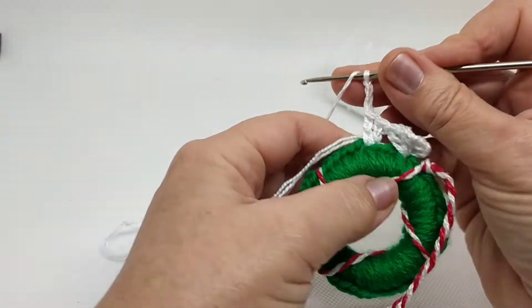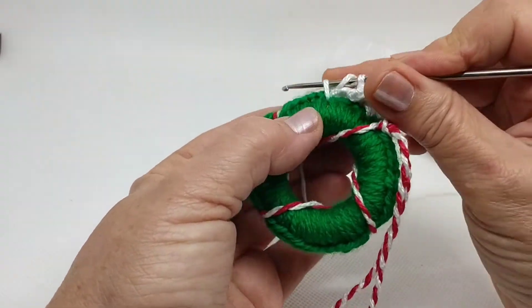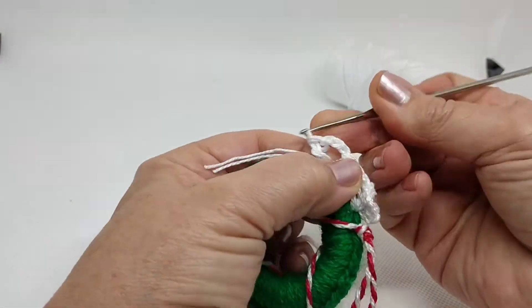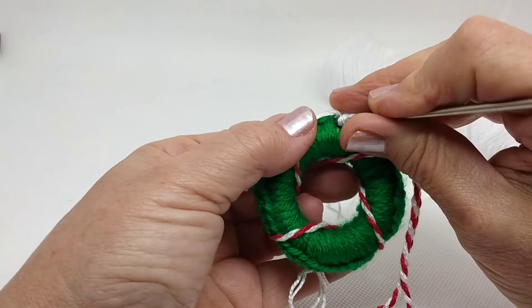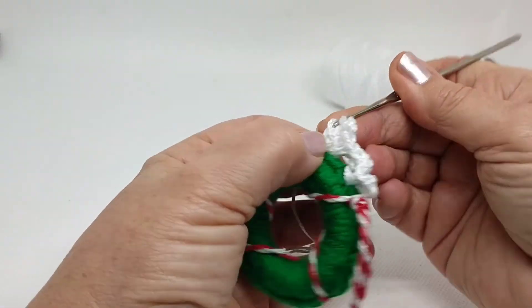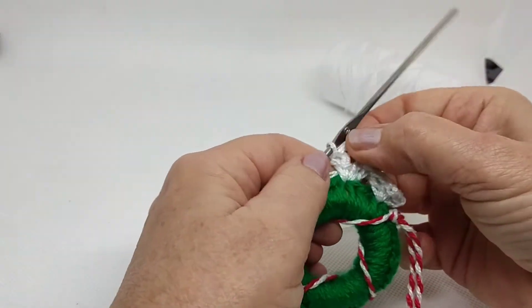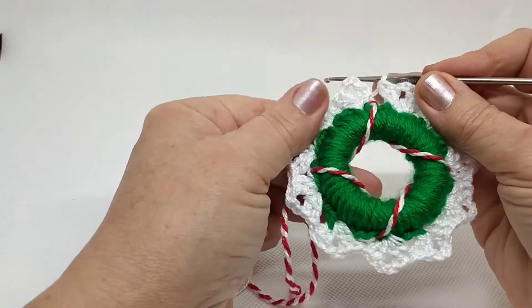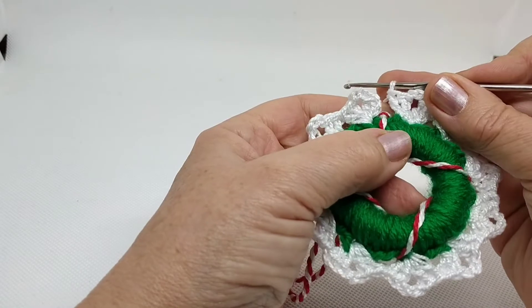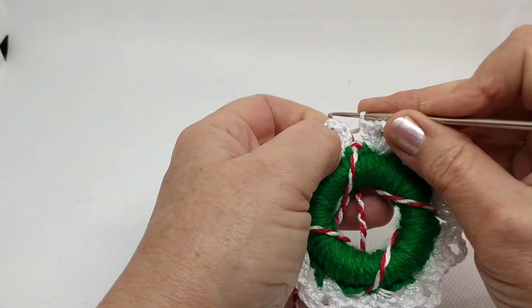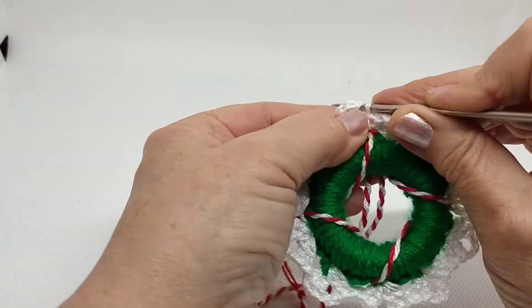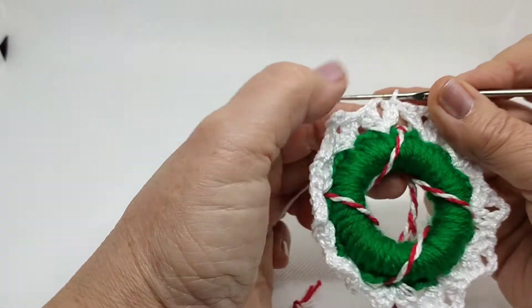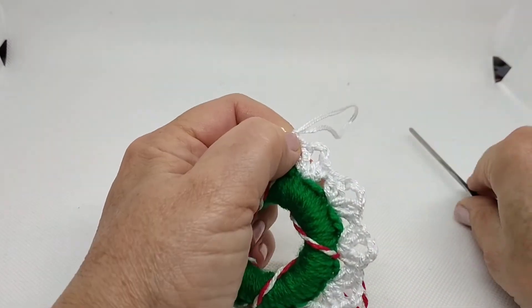Hago tres cadenetas, uno, dos, tres, y vuelvo a hacer dos puntos altos en el mismo punto. Un punto alto y otro punto alto. Así voy a ir haciendo a todo alrededor de nuestra anilla. Ya he hecho todo alrededor de la anilla y una vez llego al final pincho en la cadeneta más alta del punto primero que hicimos. Deslizo y cierro.